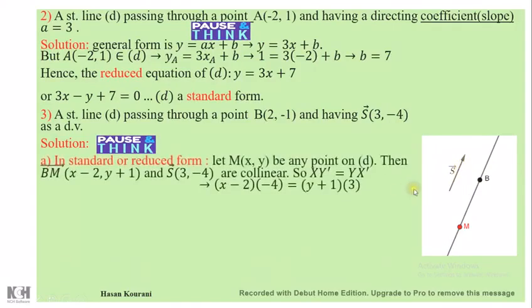In part a, I'm going to find standard and reduced form. Let M(x, y) be any point on d—any point on d which is unknown for us now.